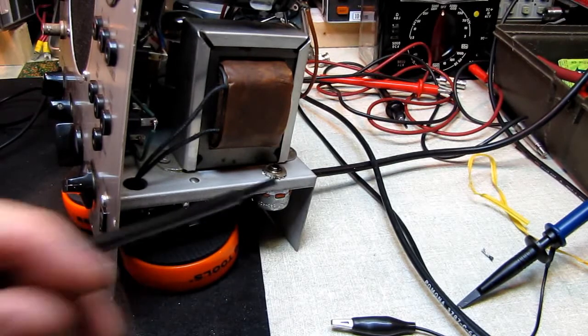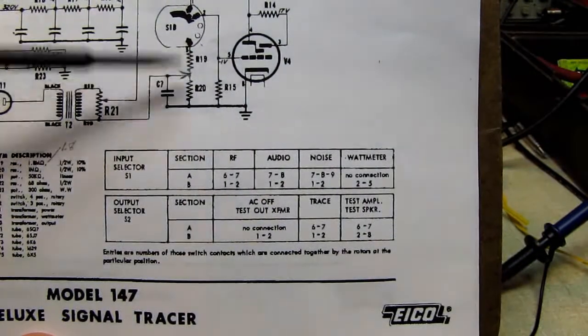So I used the existing hole, I put a 3 meg pot, replaced these two resistors right here with the pot, and calibrated it.